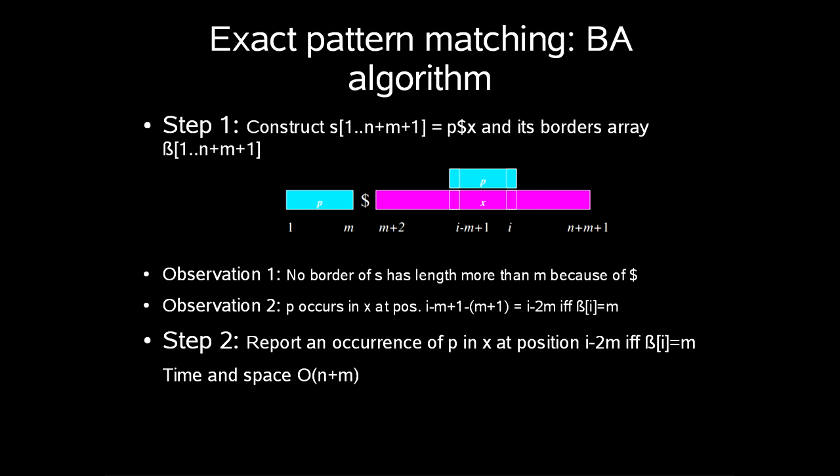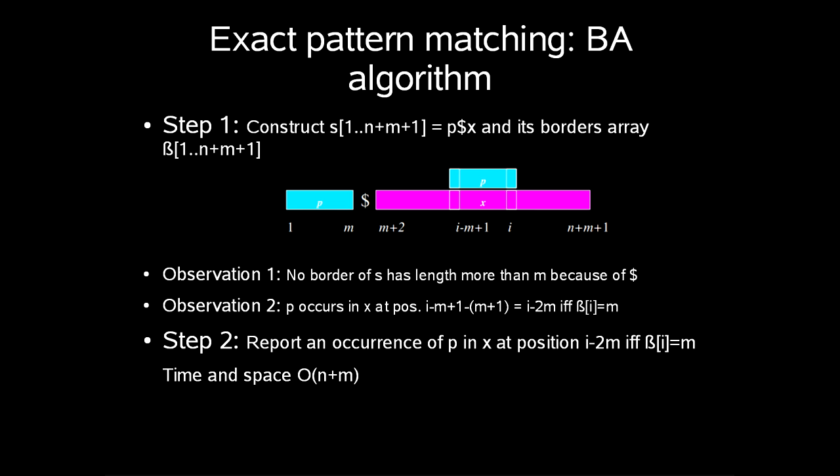So our second step is to report an occurrence of p in x at position i minus 2m if and only if beta i is equal to m. This will take time and space order n plus m.